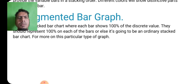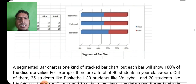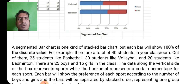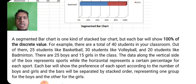For more on this particular type of graph — a segmented bar chart is one kind of stacked bar chart, but each bar will show 100% of the discrete value. For example, there are total of 40 students in your classroom, out of them 25 students like basketball, 30 students like volleyball, and 20 students like badminton. There are 25 boys and 15 girls in the class.